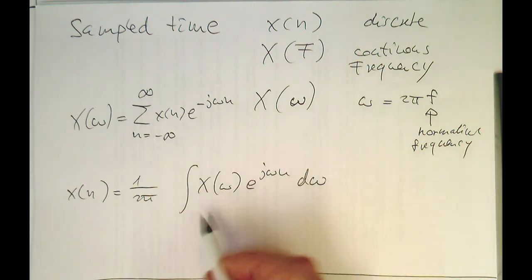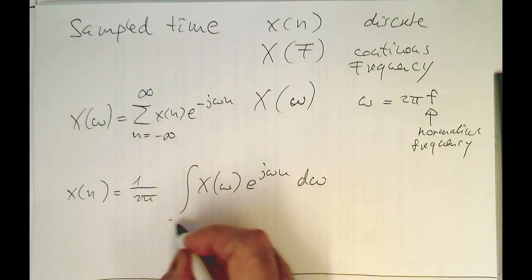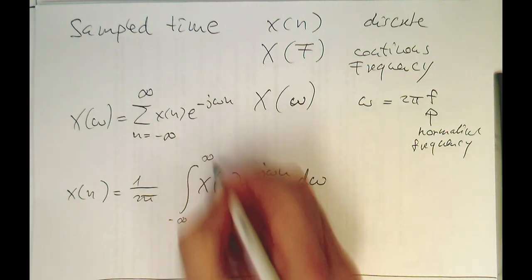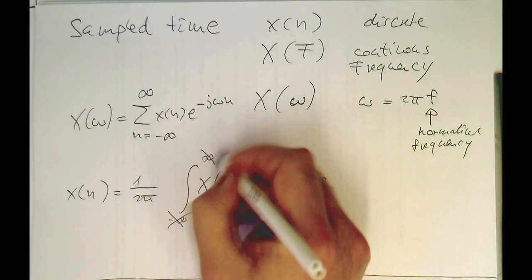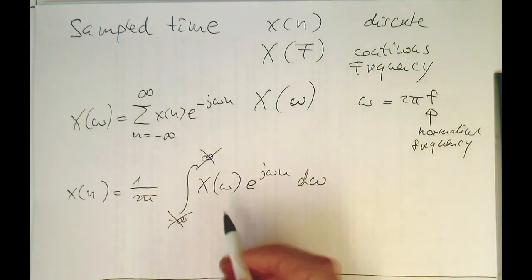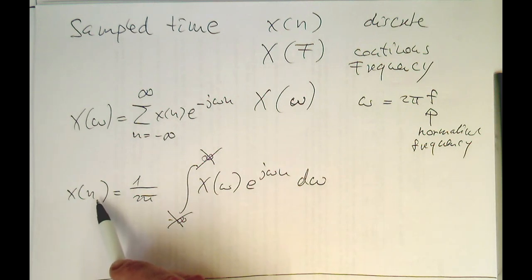So now the question is, what are the boundaries here? So in the analog case, remember the inverse Fourier transform ran from minus infinity to plus infinity here, but this can no longer be, because we are in the sample domain. So what is the maximum frequency we can represent in x of n?